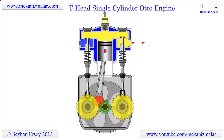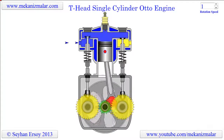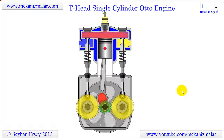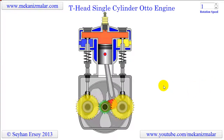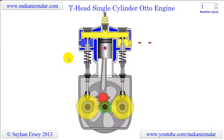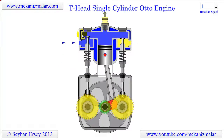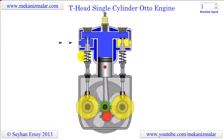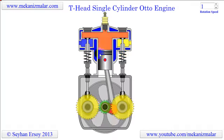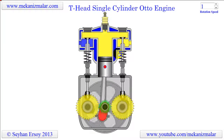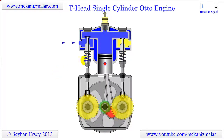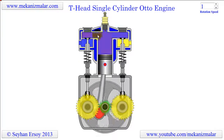Welcome to video tutorials of Mekonismiller. A T-head flathead engine is an internal combustion engine with valves placed in the engine block beside the piston, instead of in the cylinder head as in an overhead valve engine. Its name is derived from the T-shape cylinder cross section.